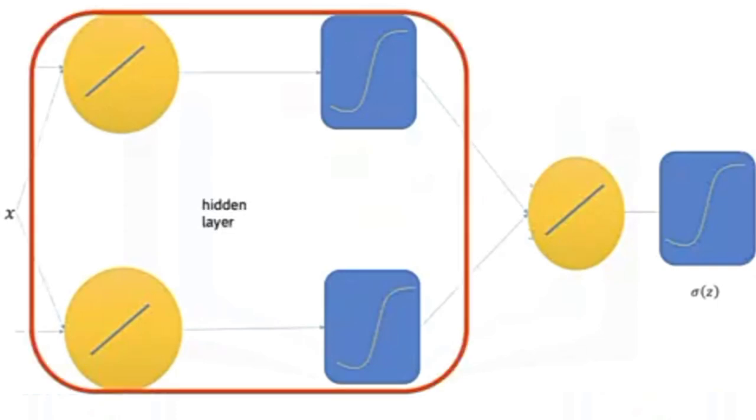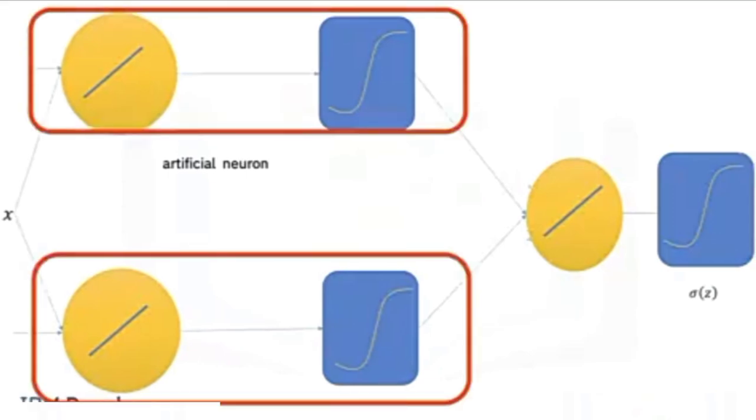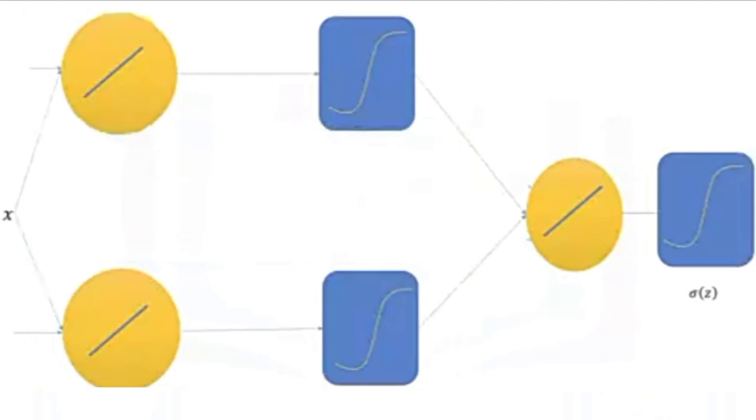We have the hidden layer. Each linear function and activation is known as an artificial neuron. In this case the hidden layer has two artificial neurons. The output layer has one artificial neuron. As it has two outputs, the input dimension for this neuron is two.